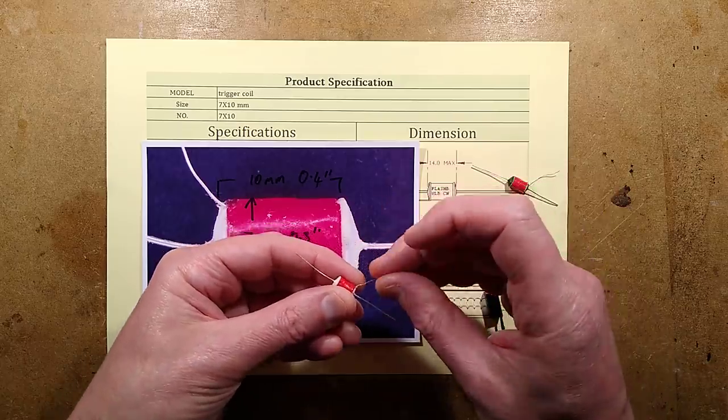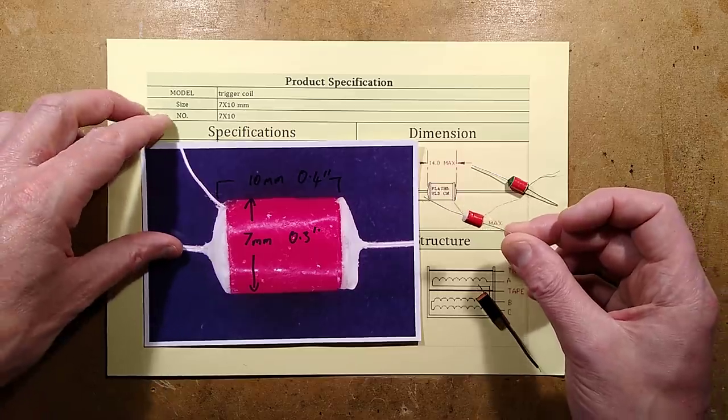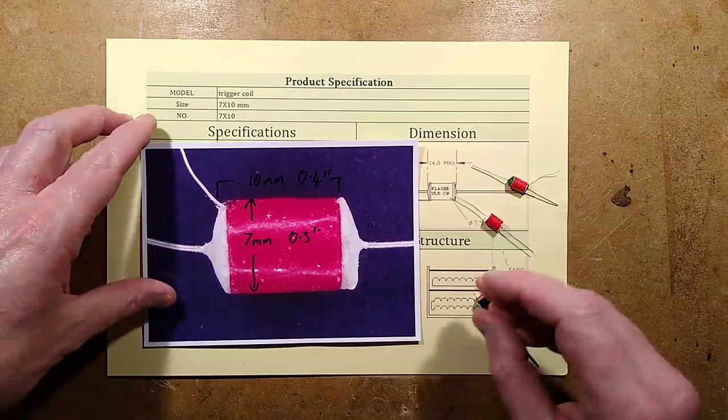I've always been impressed by the fact that these tiny little things can put out, well in the case of this one it can put out about 6000 volts, but look at the size of it. It doesn't look like it could handle that, but that's what it's rated.